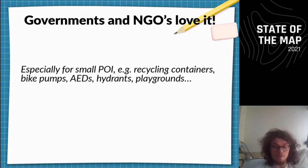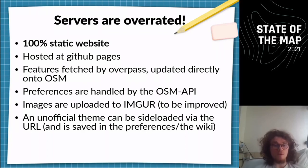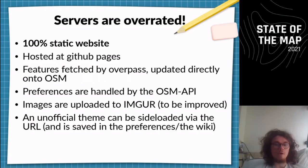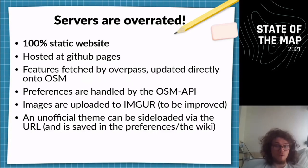Hosting your own service is overrated. MapComplete is a 100% static website. Everything is hosted at GitHub Pages and everything uses external APIs. Edits are handled by the OSM API. Fetching features goes via Overpass. Images go to Imgur — I'd love to send them to Wikimedia or Mapillary one day, but I haven't gotten around to implementing that. Unofficial themes are side-loaded via the URL, so I don't need any hosting space myself, which is a huge relief because servers break and need maintenance.